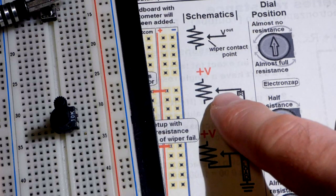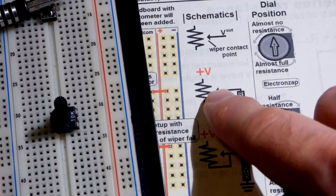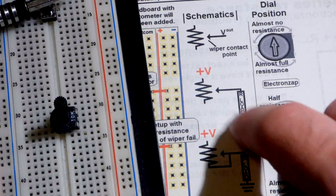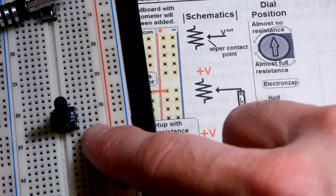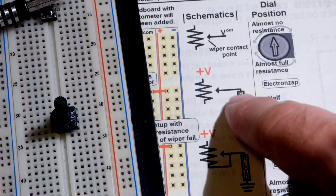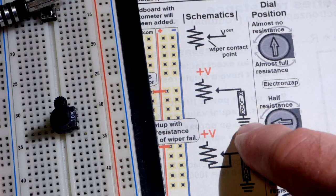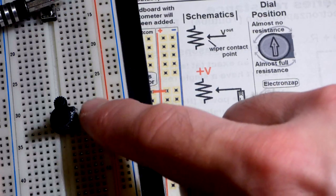So now, the less common use for the trim pot, probably in most circuits, is as a variable resistor. So there will be power supply to one or the other of the inputs there. And then at the output, we will have a load, which goes to the other side of the power supply. So it doesn't matter which input you use.